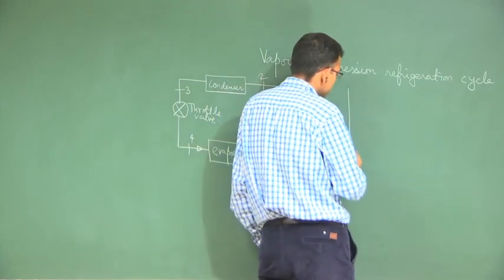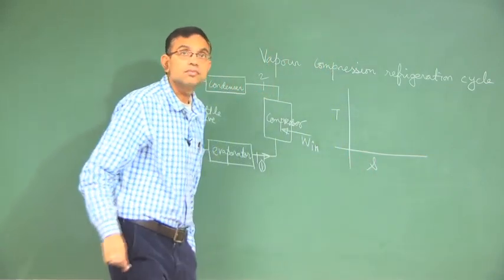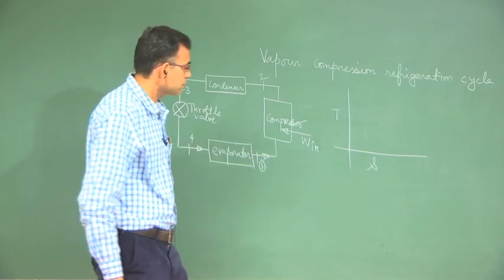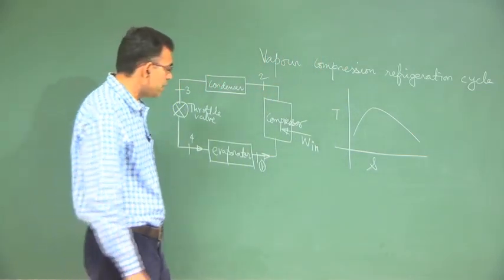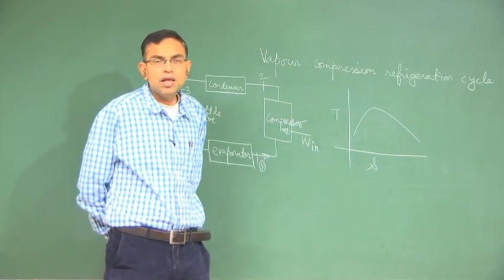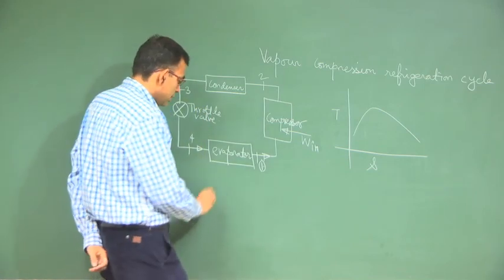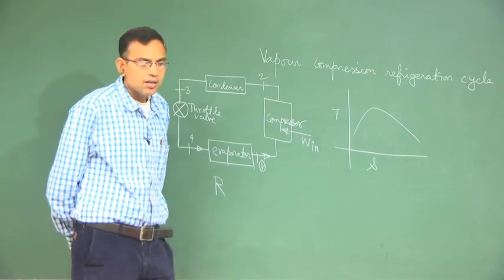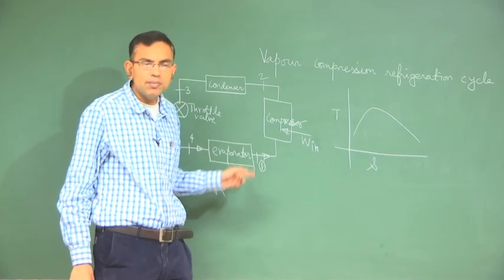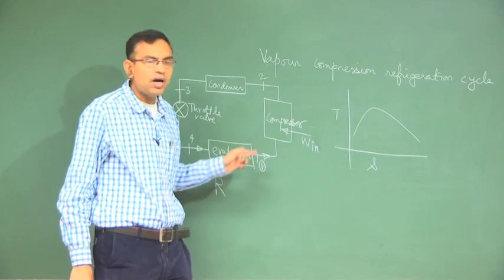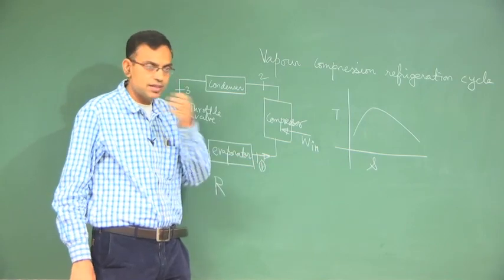I will draw this cycle first in a T-S diagram. The refrigerant circulating here is of a particular composition. In the refrigerant world, typical refrigerants are given a name starting with R. Previously we have solved problems with R12, R22, and R134A — all these fluids are essentially refrigerants. R stands for refrigerant.